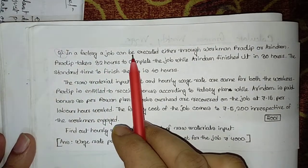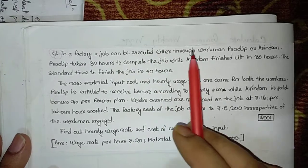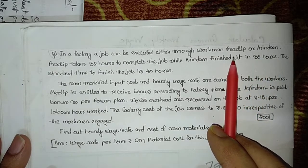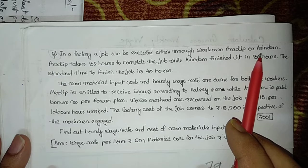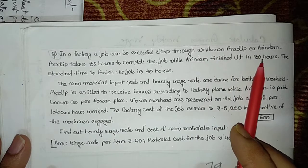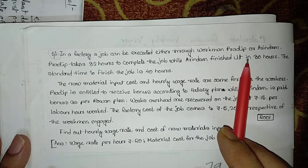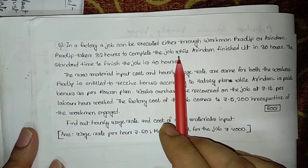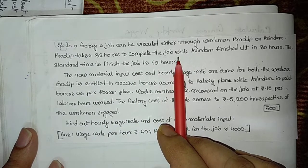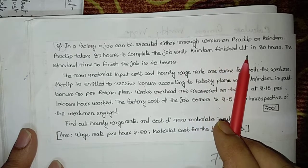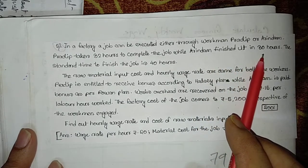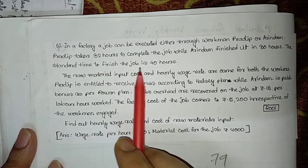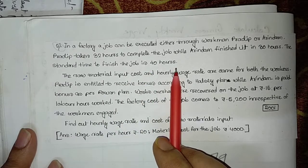In a factory, a job can be executed either through workman Pradeep or Aurindam. There are two workers - one named Pradeep and one Aurindam. Pradeep takes 32 hours to complete the job, while Aurindam finishes it in 30 hours. The standard time to finish the job is 40 hours.